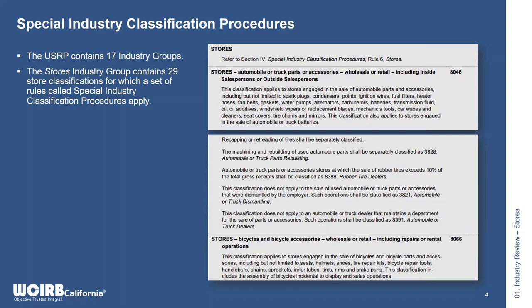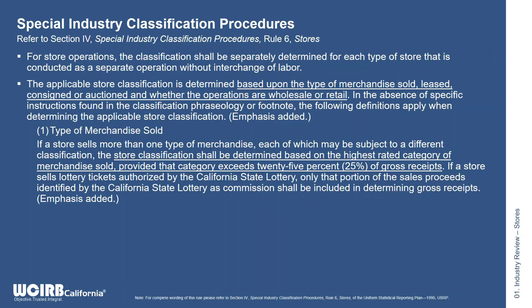The special industry classification procedures direct how to classify a store based on the type of merchandise that is sold, leased, rented, or auctioned. Unless there is specific direction in the class phraseology or footnote, the store is determined based on the highest rated category of merchandise sold, provided it exceeds 25% of the gross receipts, and whether the majority of sales are wholesale or retail. Online shopping and e-commerce businesses still need to be classified based on the products they're selling and who they're selling to. A retail store that is completely online would still be assigned to 8008, even if they have a warehouse or QC staff.